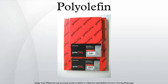A polyolefin is any of a class of polymers produced from a simple olefin as a monomer. For example, polyethylene is the polyolefin produced by polymerizing the olefin ethylene. An equivalent term is polyalkene. This is a more modern term, although polyolefin is still used in the petrochemical industry.